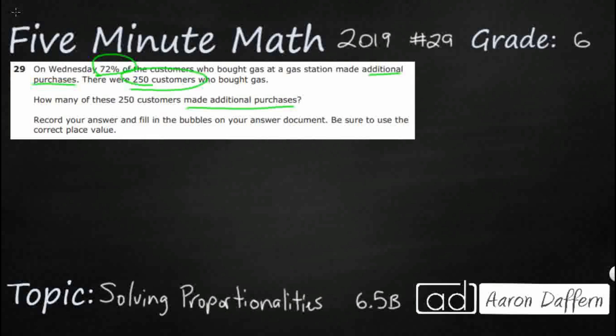So we can actually solve this two different ways. So let me show you the first way. First we are going to make our basic proportionality. And so what we are going to do is we are going to say the part over the whole. That is going to equal our percent. We can use that with some cross multiplication.